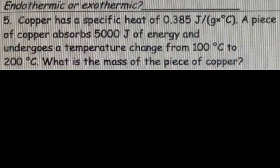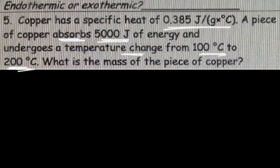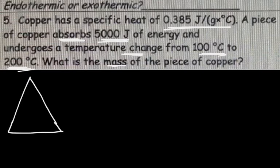Let's do some examples. We have an example with copper, and they gave us the specific heat right here. Please look at the values carefully and look at their units — joules per gram per degree C represents specific heat. This copper absorbs 5,000 joules of energy, so we expect the temperature to go up. The temperature changes from 100 degrees C to 200 degrees C, which follows our expectations. We're going to find the mass of the copper involved. You set up your triangle because the temperature went from 100 to 200 — it's a change in temperature problem.